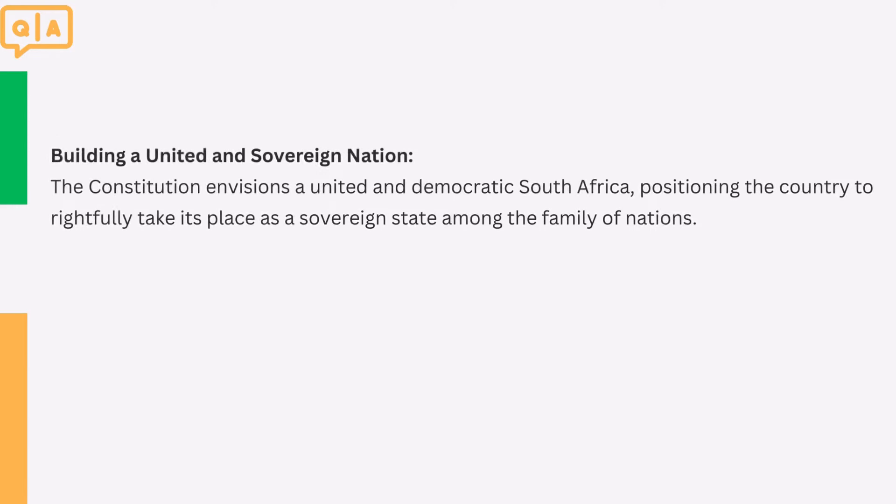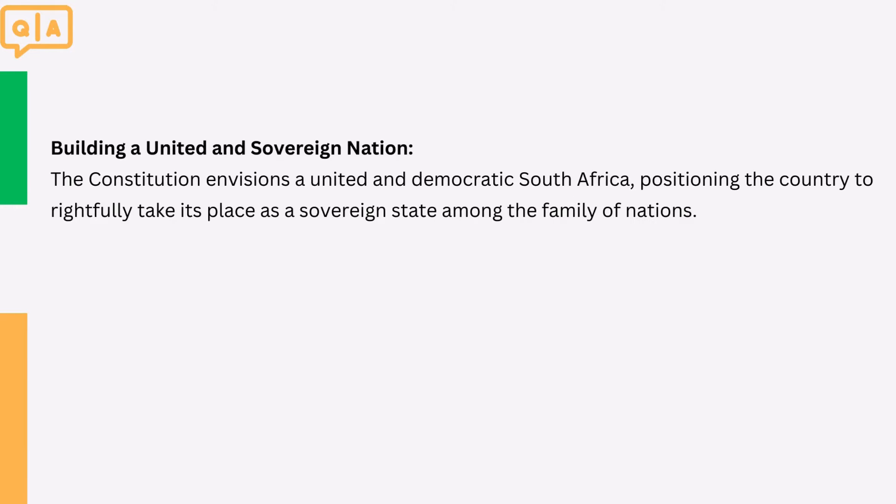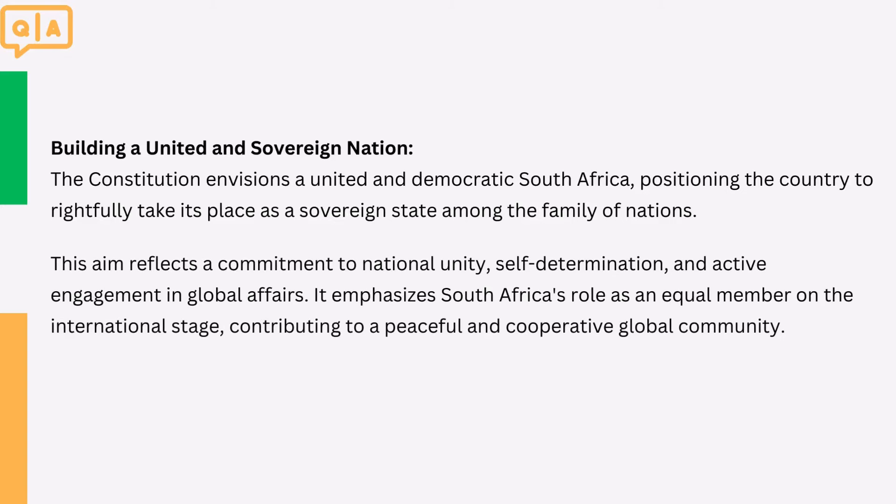5. Building a United and Sovereign Nation. The Constitution envisions a united and democratic South Africa, positioning the country to rightfully take its place as a sovereign state among the family of nations. This aim reflects a commitment to national unity, self-determination, and active engagement in global affairs. It emphasizes South Africa's role as an equal member on the international stage, contributing to a peaceful and cooperative global community.